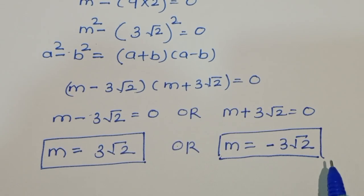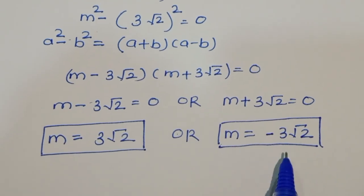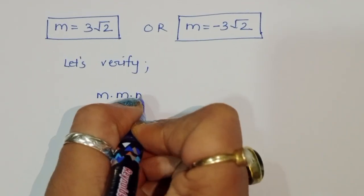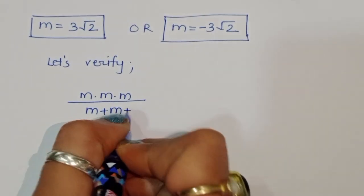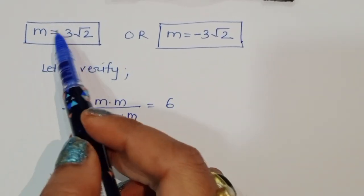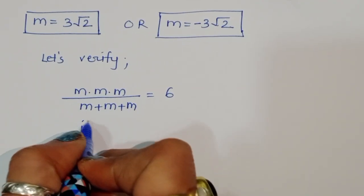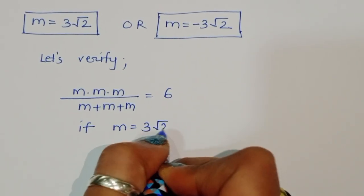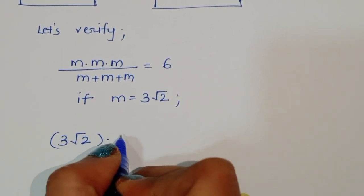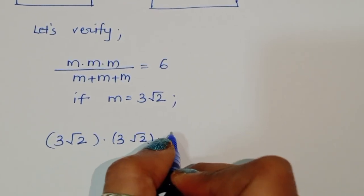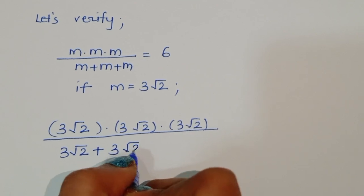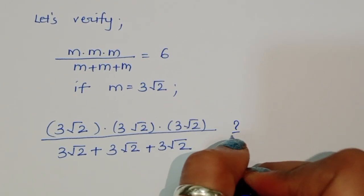We got two values of m: the first one is positive 3√2 and the next one is negative 3√2. Let's verify these are correct. The question is m times m times m divided by m plus m plus m equals 6. We substitute the positive value: if m equals 3√2, then we compute 3√2 times 3√2 times 3√2 divided by 3√2 plus 3√2 plus 3√2, and we verify this equals 6.